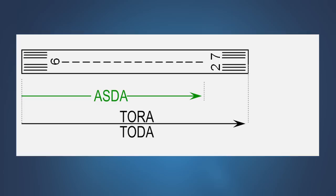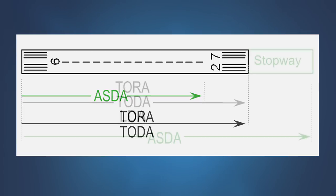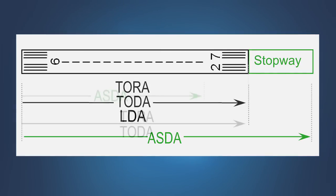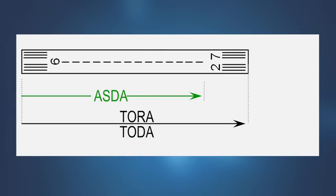The accelerate stop distance available may be longer than the physical length of the runway when a stopway has been designated available by the airport operator, or it may be shorter than the physical length of the runway if the runway lacks an adequate runway safety area or in some other way does not meet runway design standards.